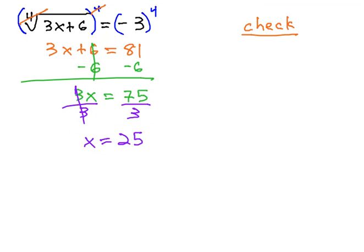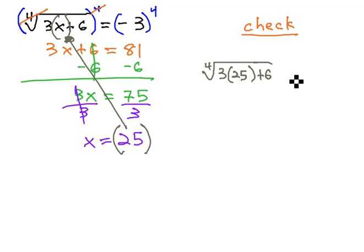Oops, but before we say that's our final answer, we still need to go back and check by replacing the x in the equation with the 25 that we found, and seeing if it really does equal negative 3. So we have the fourth root of 3x, which we found to be 25, plus 6.